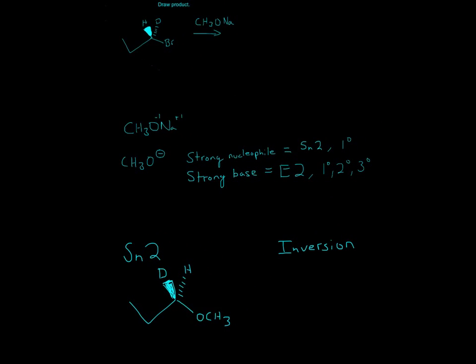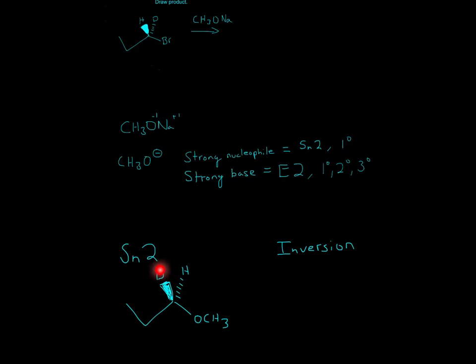Notice how here the deuterium is a wedge and the hydrogen is a dash, and then you have your OCH3. This is called inversion, because in SN2 reactions, wherever the site of attack is, if there is a wedge or a dash, just remember to flip it.